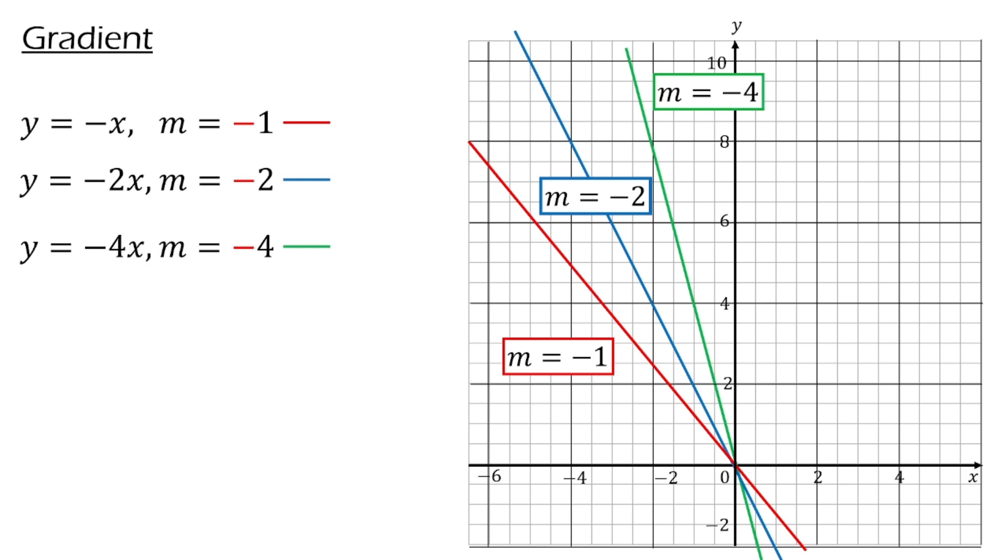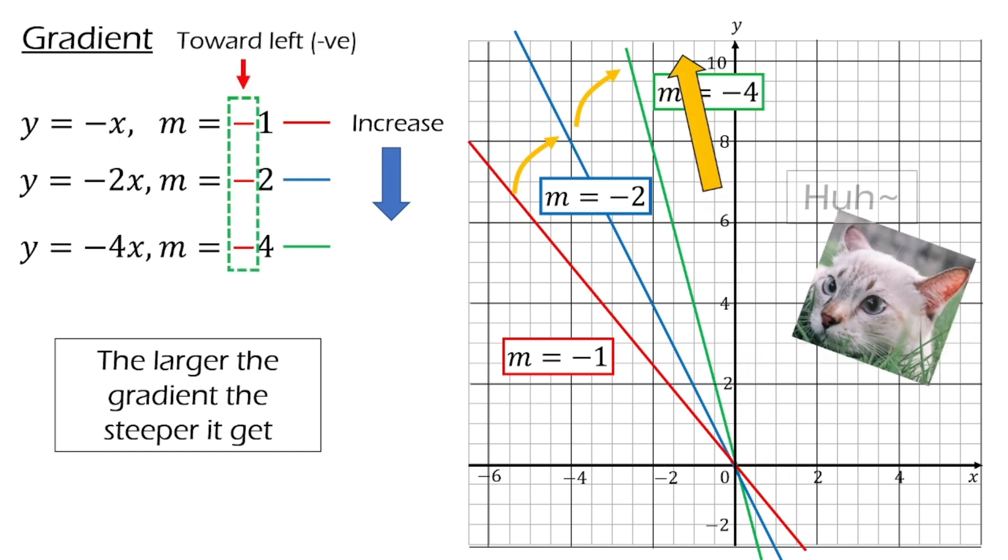Looking just at the value alone, which means without the negative sign, it also gives us the same conclusion, that the larger the gradient, the steeper it gets. What is more interesting here is the negative sign. You can see the line with negative gradient always lean to the left.